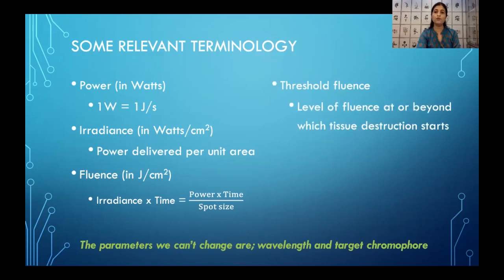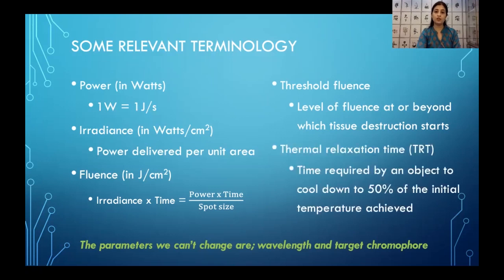Threshold fluence is the level of fluence at or beyond which tissue destruction will start — another important parameter to remember. The thermal relaxation time of the tissue is the time required by the target tissue to cool down to 50% of its initially achieved temperature. If the pulse length of the laser being delivered is equal to or shorter than the thermal relaxation time, it allows sufficient time for the tissue to cool down before the next wave of energy hits it, minimizing thermal damage.